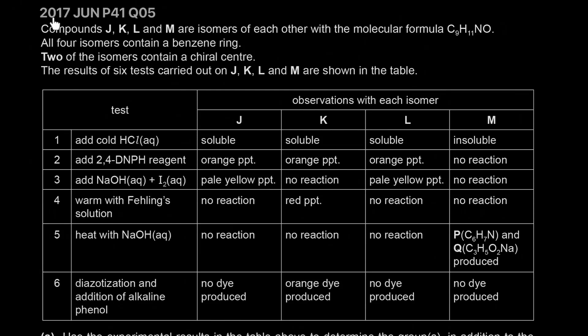Here we have 2017 May June paper 41 question number 5. Compounds J, K, L and M are isomers of each other with the molecular formula C9H11NO. All four isomers contain a benzene ring. Two of the isomers contain a chiral center. The results of six tests carried out on J, K, L and M are shown in the table.